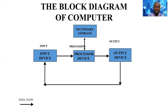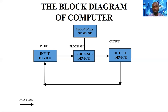The block diagram is in the form of a cycle — processed data, which is information, can be sent back into the input device for future use. So in one way or another, it operates as a cycle. This is the block diagram of a computer, which you can use to explain the concept at each stage.